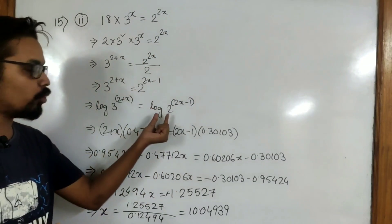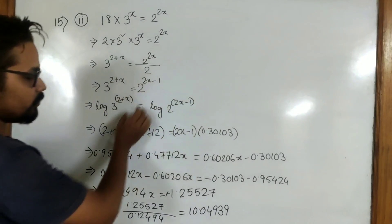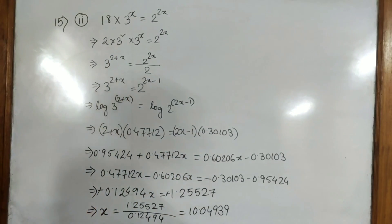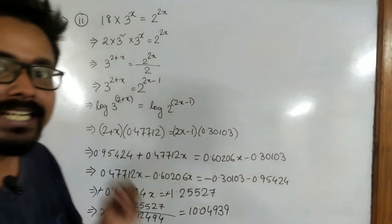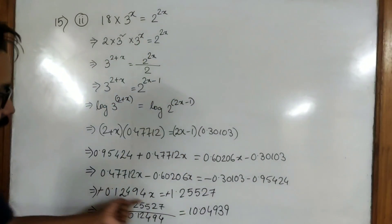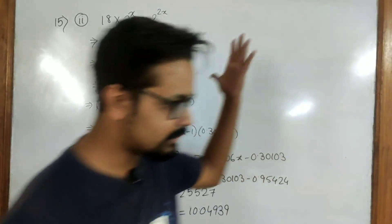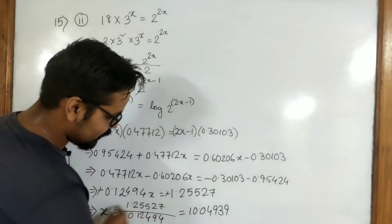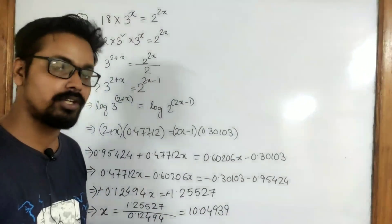After taking logarithm, it becomes very easy. You just have to bring the power on the left side — power in front of the log — put the value of that log from the log table, and then solve just like a simple linear equation. The toughest part in this sort of sum is not anywhere else; it is right here where you have to do the division calculation — this division becomes very tough.